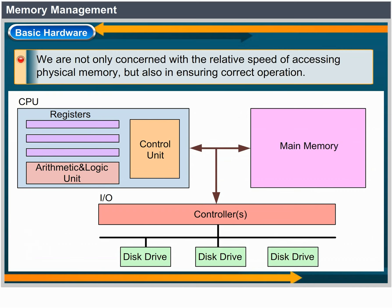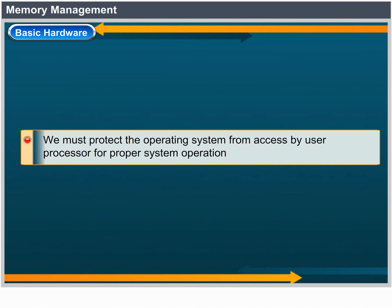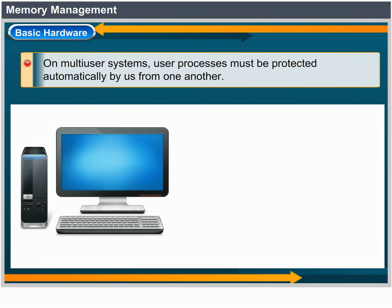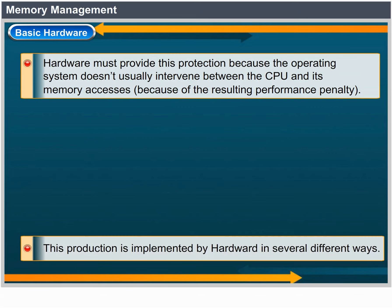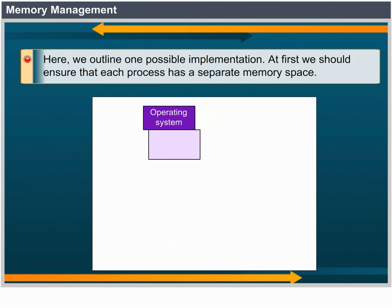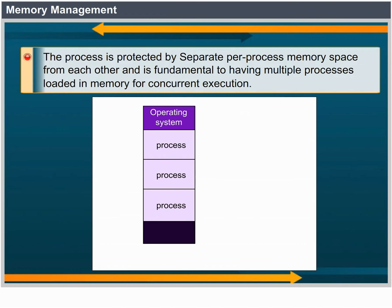Not only are we concerned with the relative speed of accessing physical memory, but we also must ensure correct operation. For proper system operation, we must protect the operating system from access by user processes. On multi-user systems, we must additionally protect user processes from one another. This protection must be provided by the hardware because the operating system doesn't usually intervene between the CPU and its memory accesses because of the resulting performance penalty.